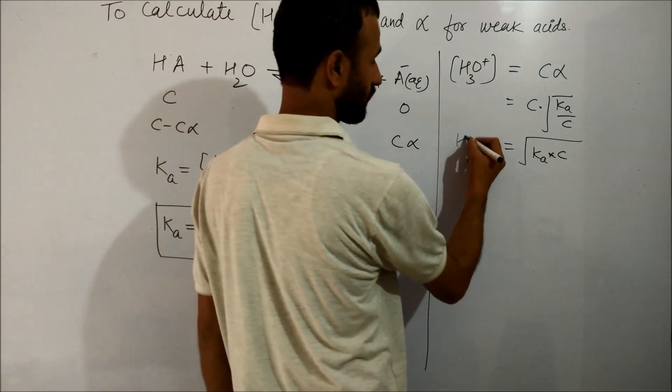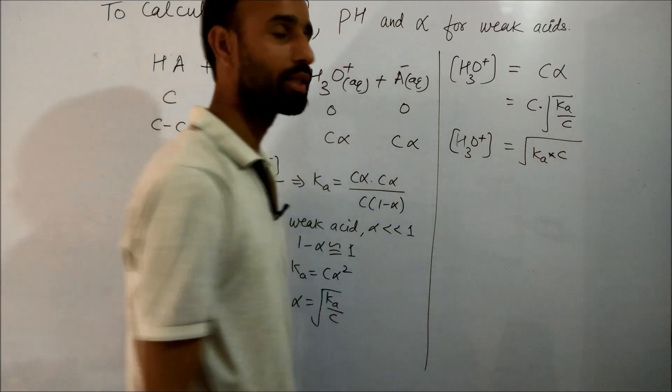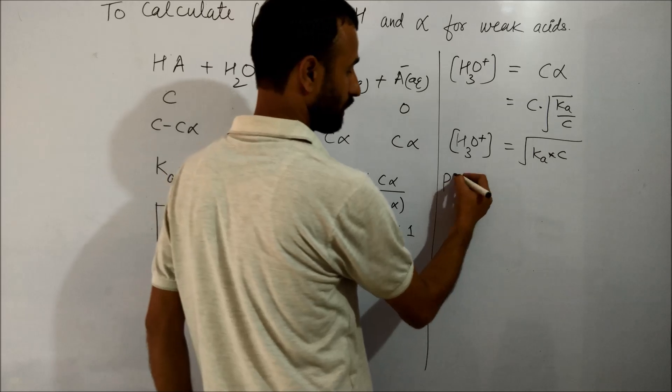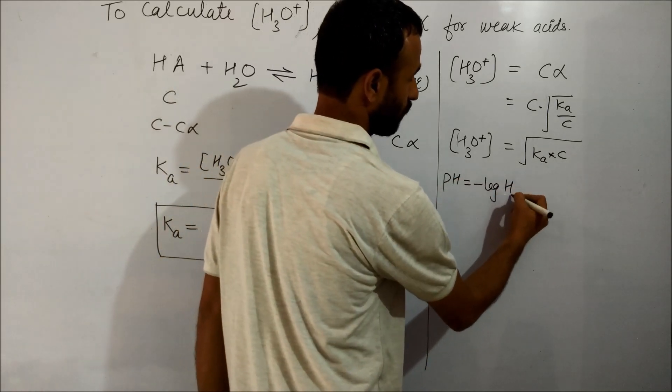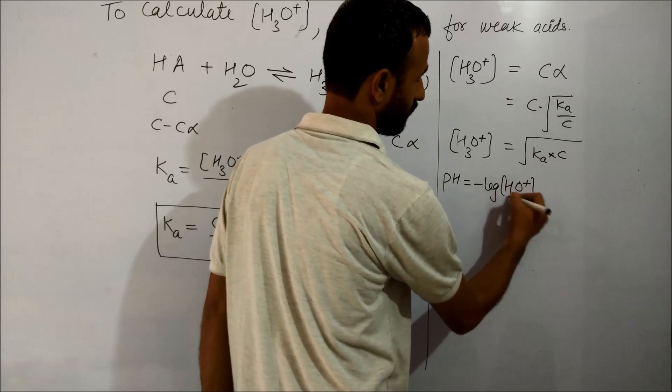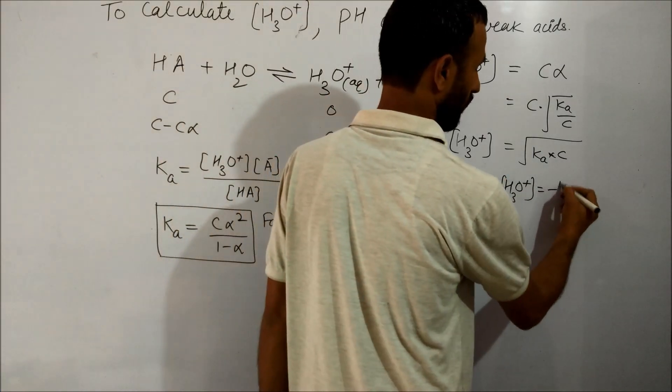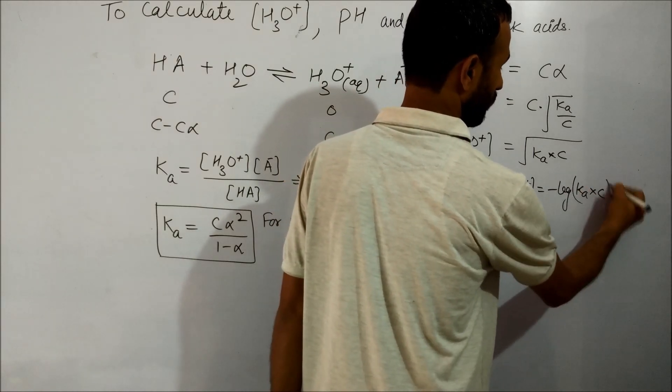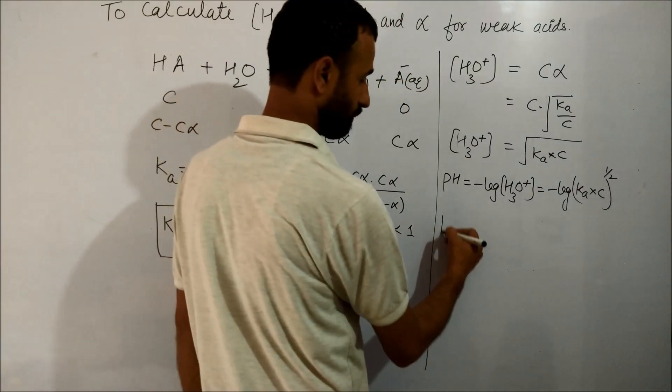So [H3O+] equals square root of Ka times C, and pH equals minus log of [H3O+]. That equals minus log of (Ka × C) raised to the power half.